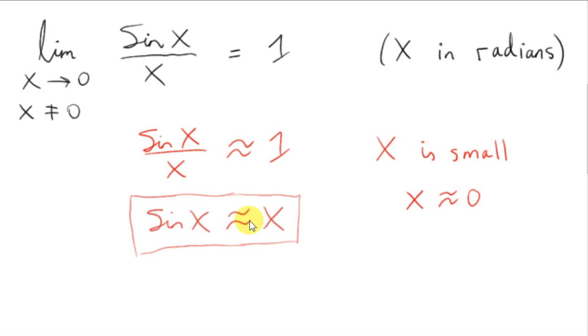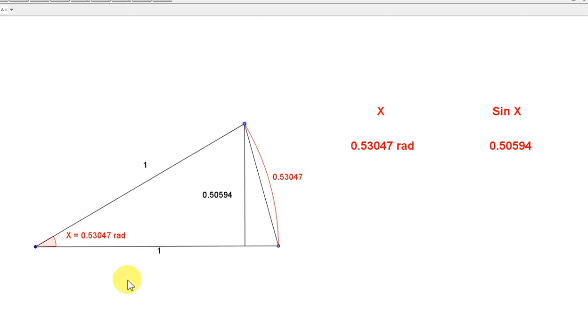Now, this is a useful simplification in physics and other applications. If x is in radians and close enough to 0, sin of x can be replaced by x. To see that more clearly, we are going to look at a simulation. We are going to compare x to sin of x for values of x that are close to 0.